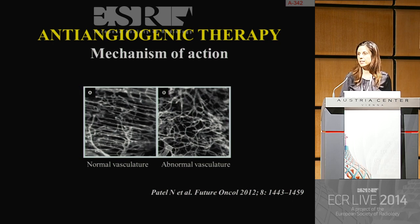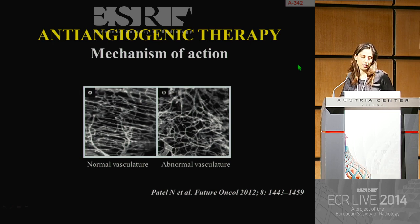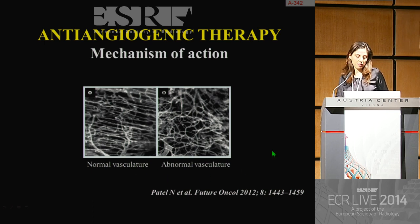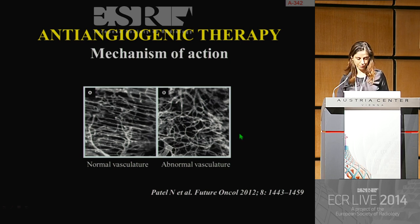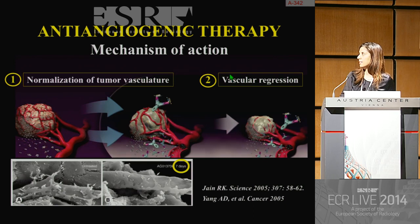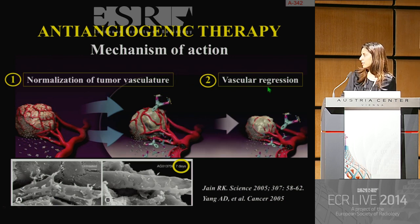What is the mechanism of action of anti-angiogenic therapy? To understand it, we have to be aware of a few characteristics of the tumor vessels. Tumoral vessels are really distinct from normal vessels — they are disorganized in shape and abnormal in structure. The anti-angiogenic therapy has two main impacts: the first one is the normalization of tumor vasculature, and the second one is to achieve vascular regression.